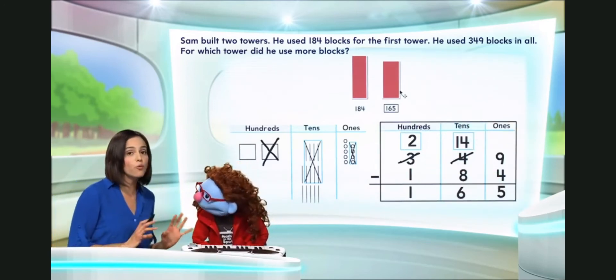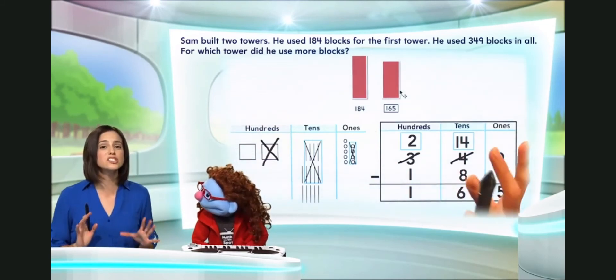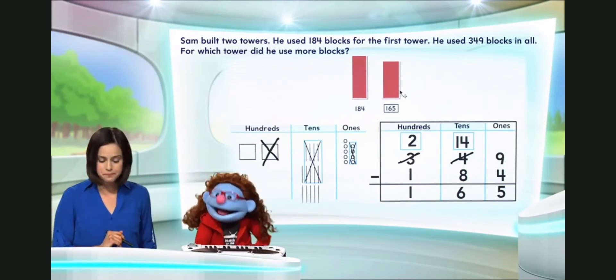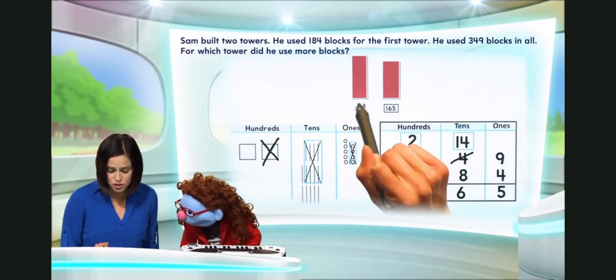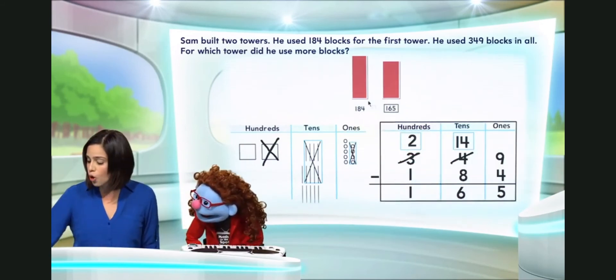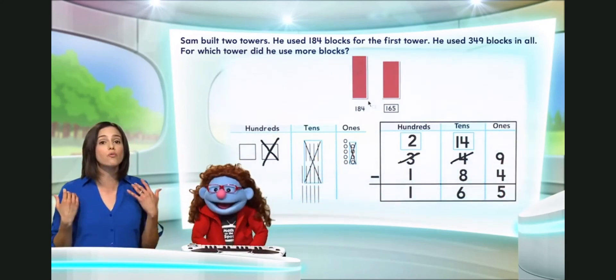Which means that Sam used 165 blocks for his second tower. Now, Jeannie, we're not done. Remember, the question was for which tower did he use more blocks? Let's see. Well, we know 184 is greater than 165. So, Sam used more blocks for tower one.